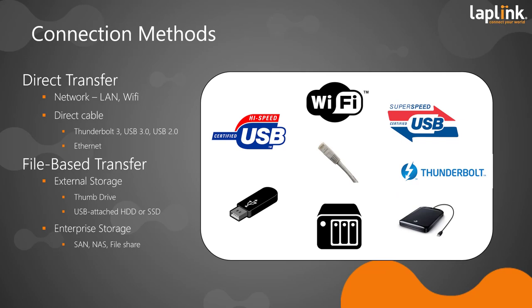There are two basic methods of migration. The first is the so-called direct transfer — a live or streaming transfer. This is a synchronous process where you have two machines, old PC and new PC, connected up, and PCMover runs live on both machines at the same time, transferring only the information that is needed.